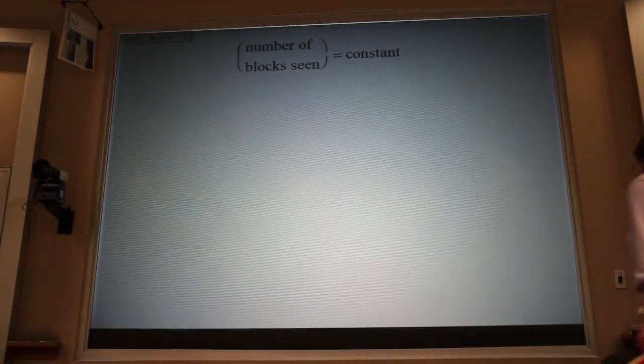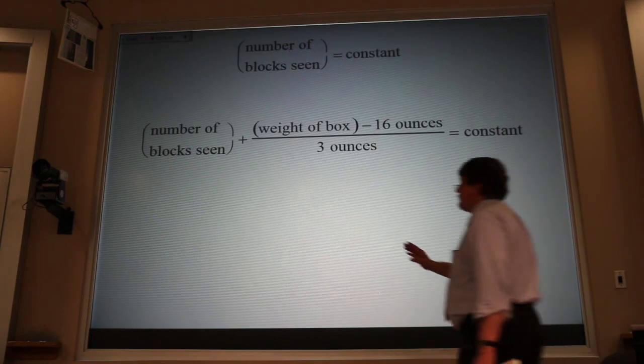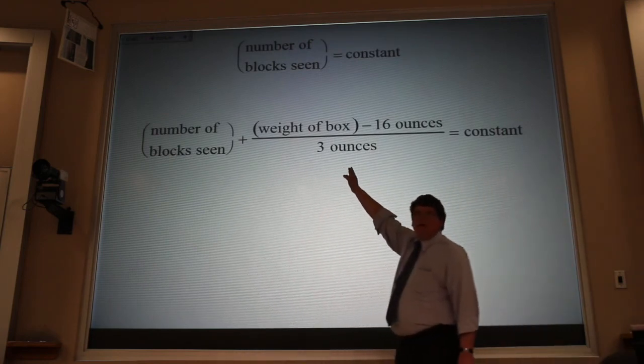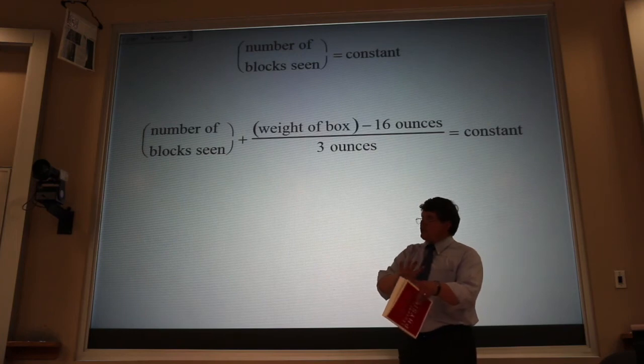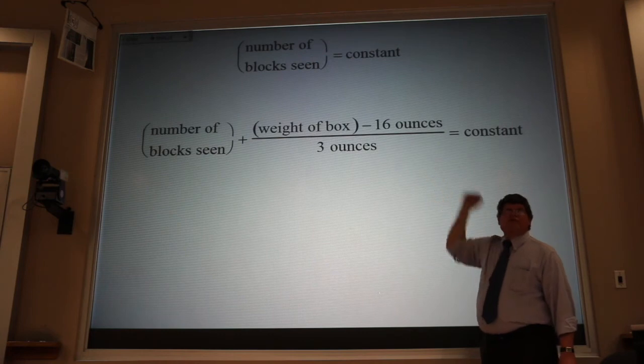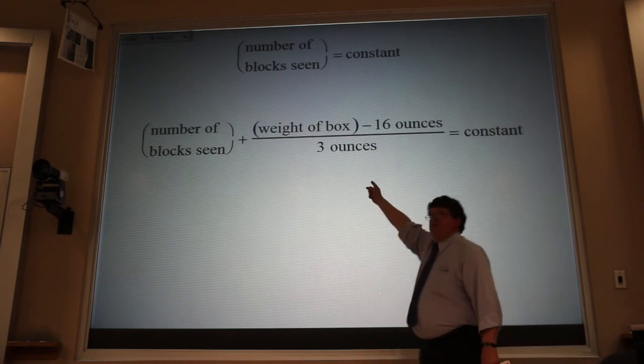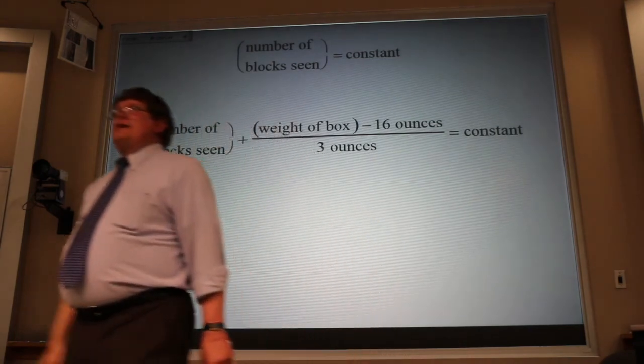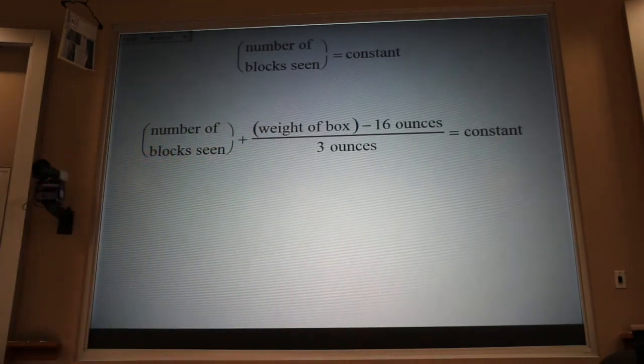And then, whenever she comes in to count the blocks, if she doesn't see 28, she weighs the toy box, keeps it closed, she can't open it. She subtracts off the weight of the empty toy box. The difference has to be blocks. She divides by the number of ounces in a block, and she gets 28 every single time.